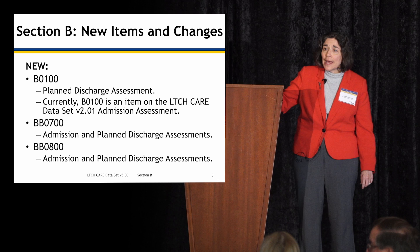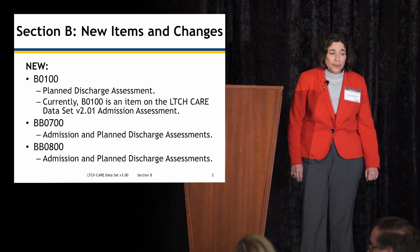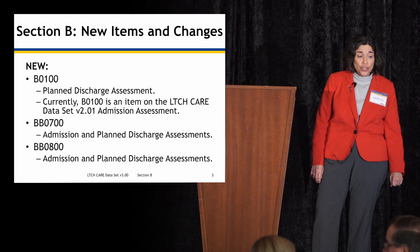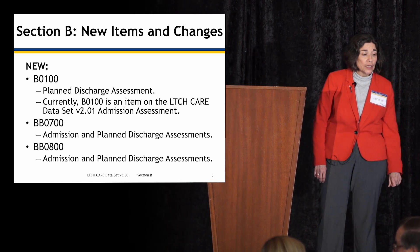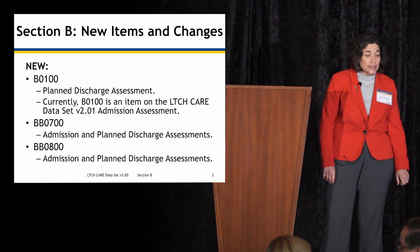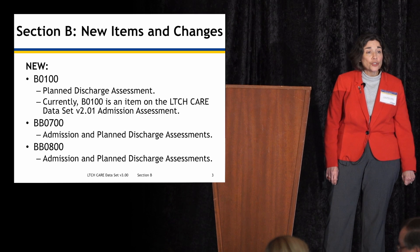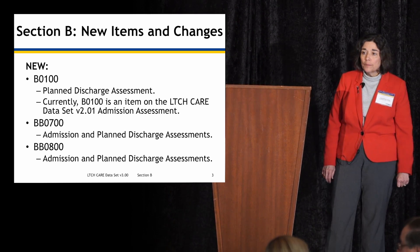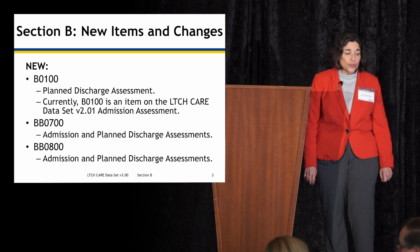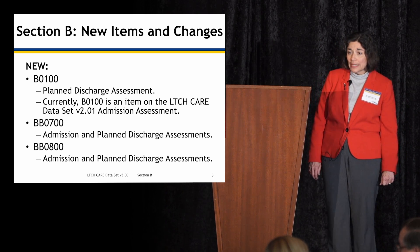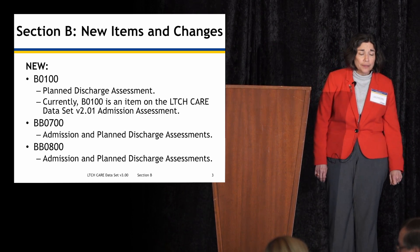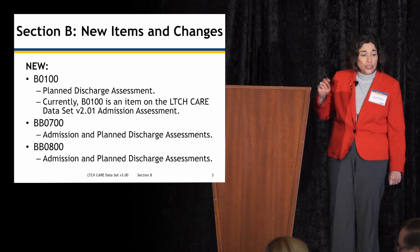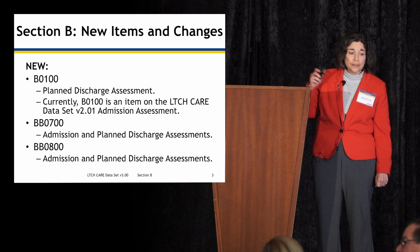The new items and changes to Section B: B0100 is on the planned discharge assessment. Currently, B0100 is an item on the version 2.0 admission assessment. BB0700 is on both the admission and planned discharge assessments, and BB0800 is also on the admission and planned discharge assessments.